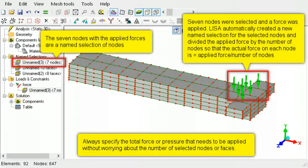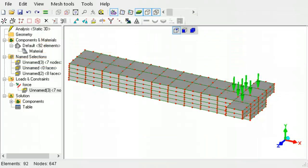Force and pressure are always applied to a named selection. Whether the named selection is a collection of nodes or faces, specify the total force or pressure to be applied, and LISA will take care of distributing it appropriately over the selected nodes or faces.